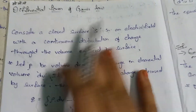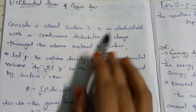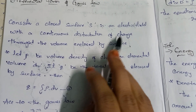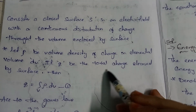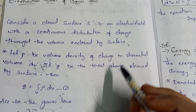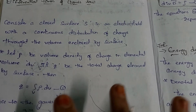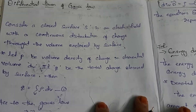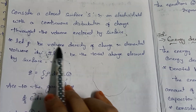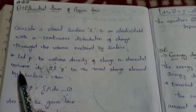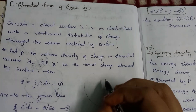Now we will discuss the differential form of Gauss's law. Consider a closed surface S in an electric field with a continuous distribution of charge throughout the volume enclosed by the surface. Let ρ be the volume charge density and let Q be the total charge enclosed within the closed surface.